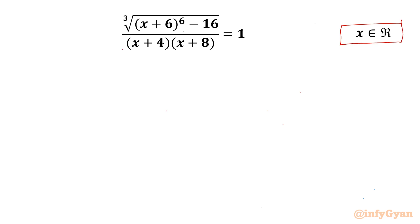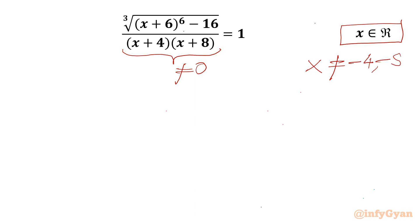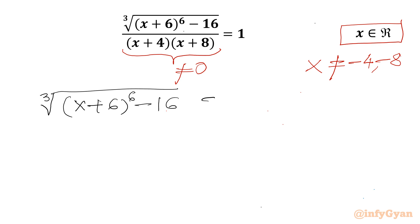Let's get started with our denominator itself. The denominator cannot be 0, so x cannot be equal to negative 4 and negative 8. Now I can cross multiply, so I will be writing our equation as: cube root of (x plus 6) to the power 6, minus 16, equal to (x plus 4)(x plus 8).